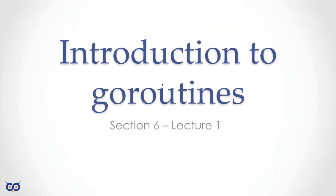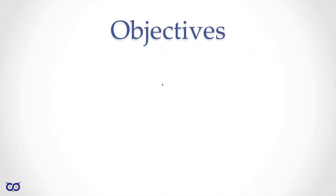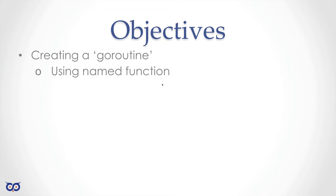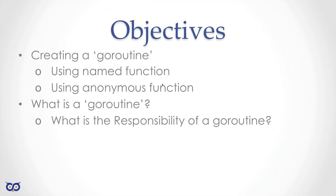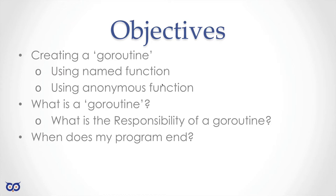We're going to kick things off in this section with Lecture 1. Our objectives for this lecture are to cover how to create GoRoutines using named functions and anonymous functions — functions that you create without names. We'll also figure out what a GoRoutine is indirectly by understanding its responsibility. Then we're going to talk about how your program ends. When main ends, your program ends, and now that we're creating GoRoutines it's important to understand the consequences of that.